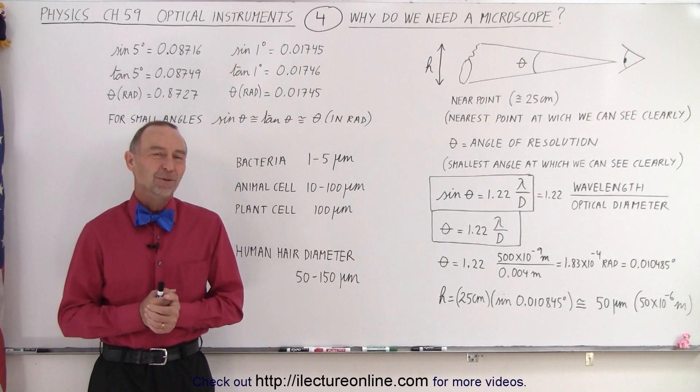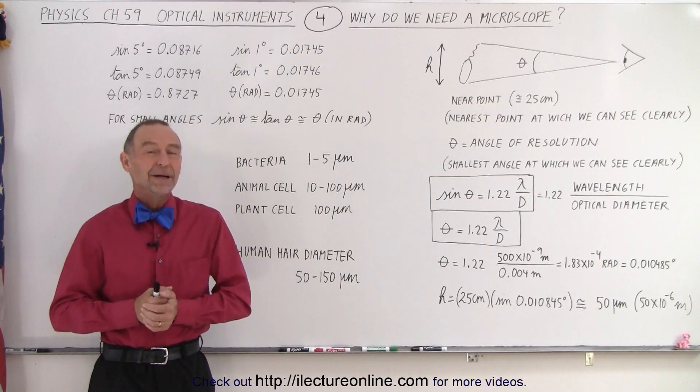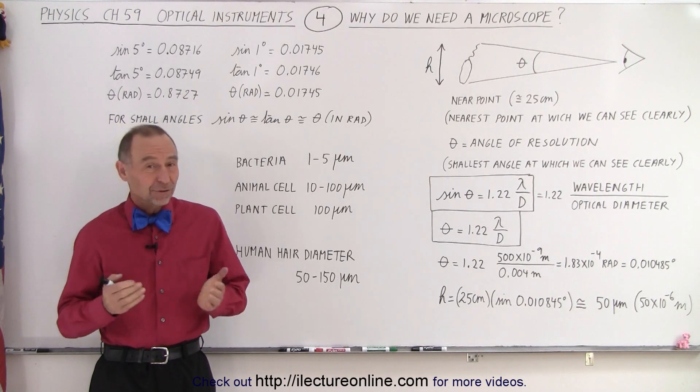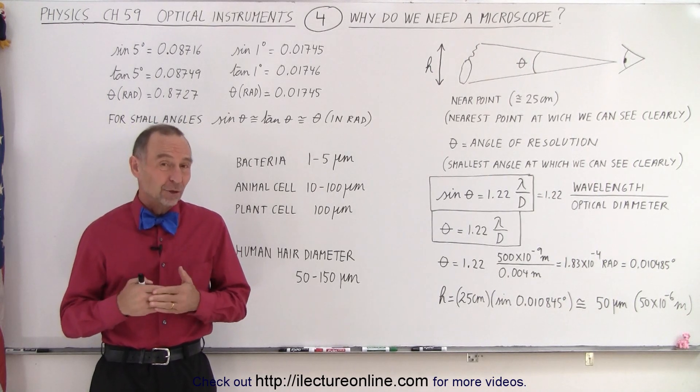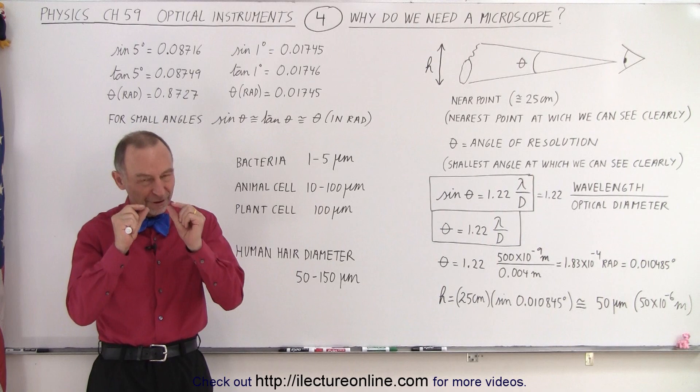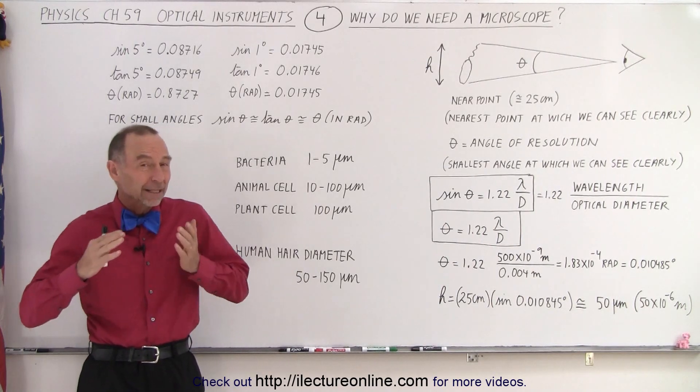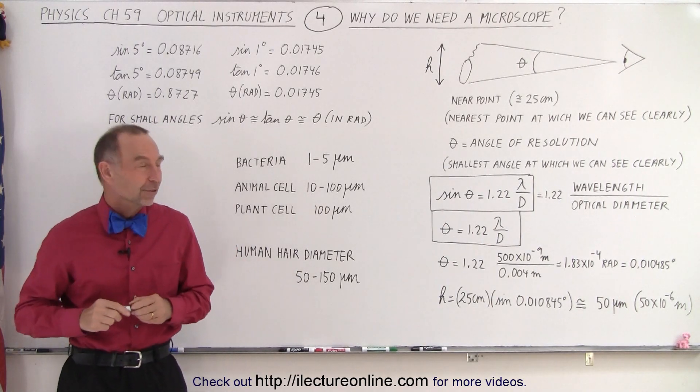Welcome to iLectureOnline. So why do we need a microscope? It turns out that the human vision is actually quite remarkable. We're able to see very tiny things and let me explain a little bit about why that is.